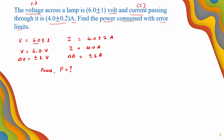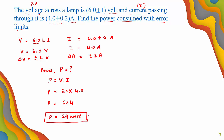Power is given by P = V × I. Substituting the values: P = 6.0 × 4.0 = 24 Watt. Now we have to find the maximum possible error. Observe that P = V × I uses multiplication, so we use the error in multiplication formula.